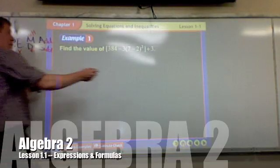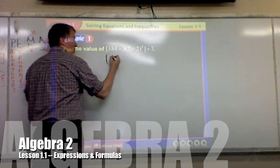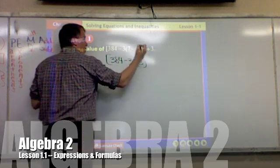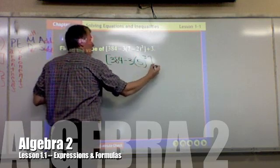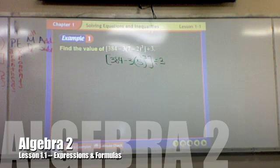So I go to 7 minus 2 and evaluate that. What is 7 minus 2? 5. So 384 minus 3 times 5 cubed. Once you take the parentheses and get it to a single number, then you can do the next part. You've always got to get down to a single number before you do anything else.